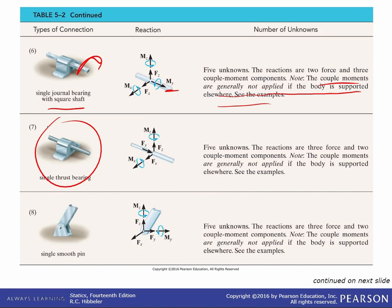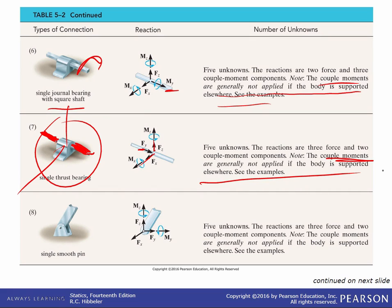A thrust bearing can take a force in the same direction as the rotation axis, so we add force F sub Y. It also prevents translation in Z and X and can support moments about the X and Z axes. Again, the couple moments are generally not applied if the body is supported elsewhere.